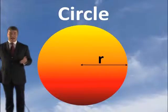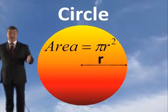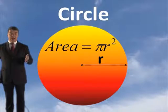What about the area of a circle? How do you determine the area of a circle? It's pi r squared — the area of a circle is pi r squared.